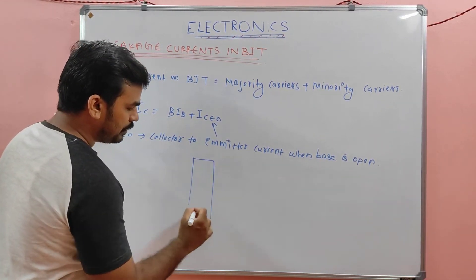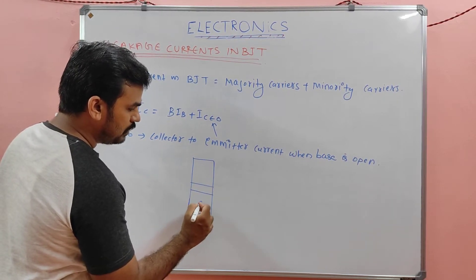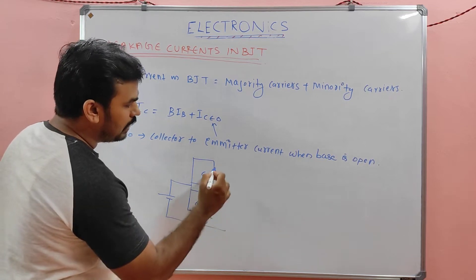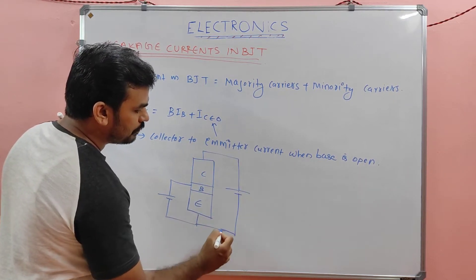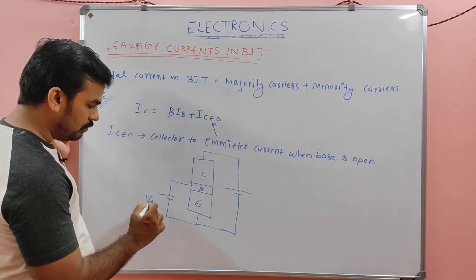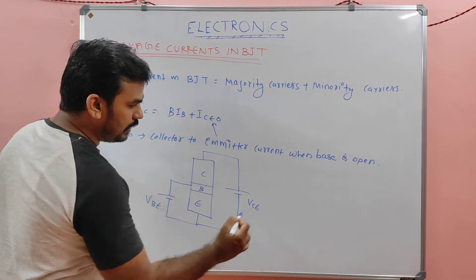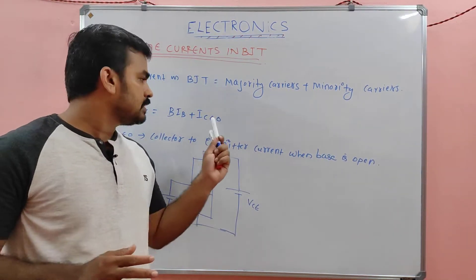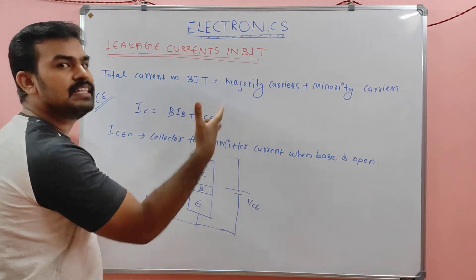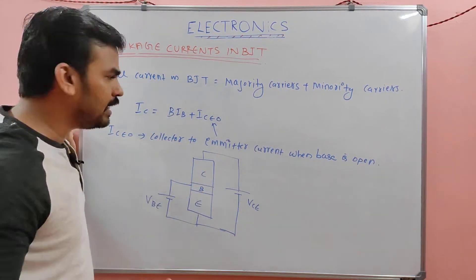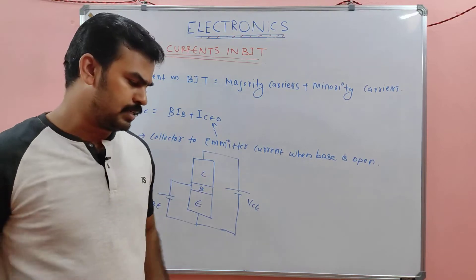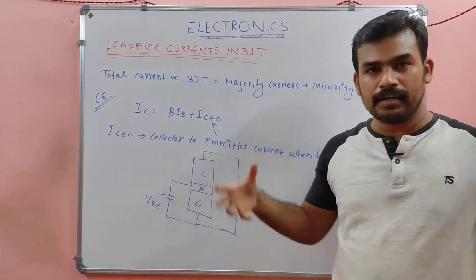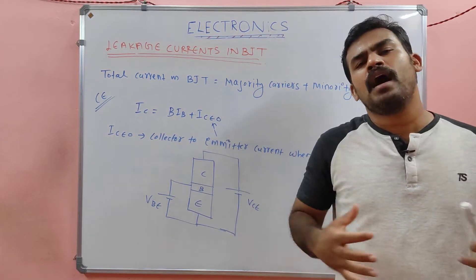In the common emitter configuration schematic, we have the emitter, base, and collector. The emitter-base junction is forward biased and the collector-base junction is reverse biased. The voltages are labeled VBE and VCE. In the BJT, ICO is called the leakage current. The term β·IB is the current due to majority carriers, while ICEO represents the leakage current. This leakage current comes into play when the junction is reverse biased, and it is highly dependent on temperature — increasing the temperature causes the leakage current to increase very rapidly.